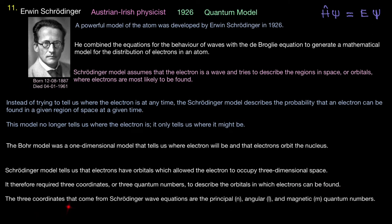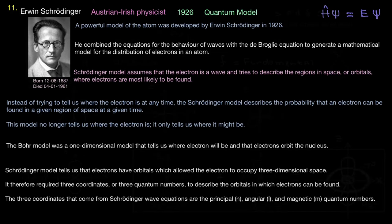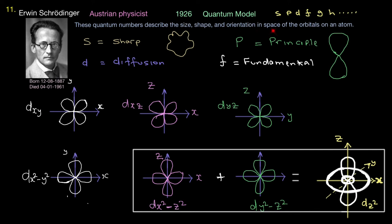It therefore requires three coordinates or three quantum numbers to describe the orbitals in which electrons can be found. The three coordinates that come from Schrödinger wave equations are the principal n, angular l and magnetic m quantum numbers. This is the time independent Schrödinger equation where H with hat is the Hamiltonian, that's the total energy. This is the kinetic energy plus potential energy. Psi is the wave function which gives the energy and the wave function. So this is what we call time independent Schrödinger equation. These quantum numbers describe the size, shape and orientation in space of the orbitals of an atom. We have the S which stands for sharp which means the electron goes round in a wave in a circular wave. And we have P which is called principle and that is like a dumbbell shape. We have D which is diffusion and we have F which is fundamental and G, H and it goes on alphabetically.